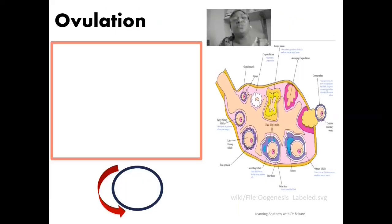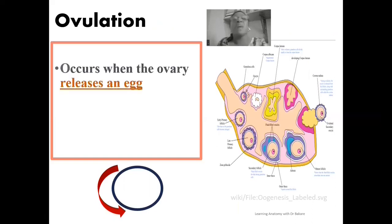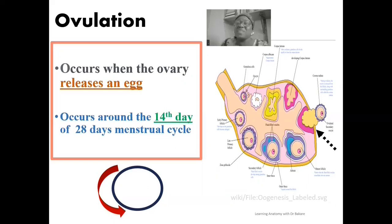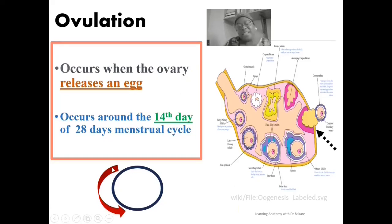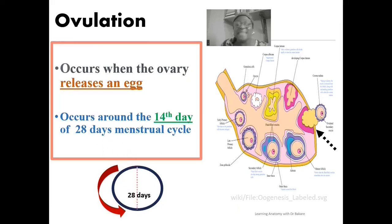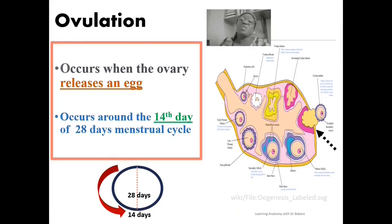Ovulation is the release of a mature egg by the ovary, and it usually occurs at the middle of the 28-day menstrual cycle. The menstrual cycle is the duration from one menstruation to the next, typically 28 days. At about the 14th day of the 28-day cycle, the process of ovulation is initiated. This does not just occur spontaneously — it occurs under regulated hormonal influences.